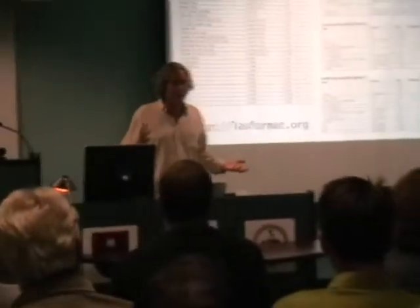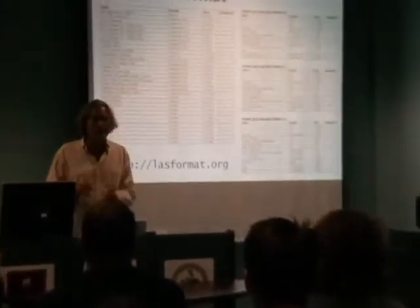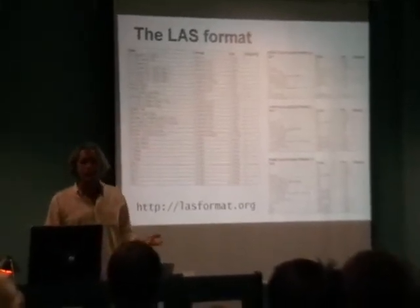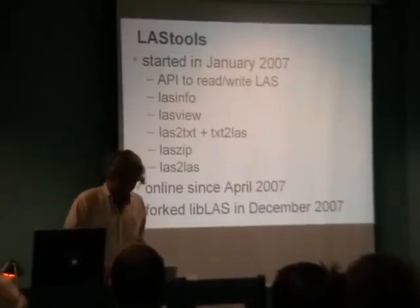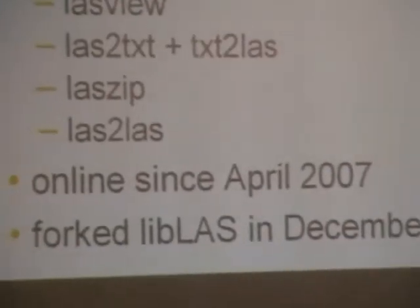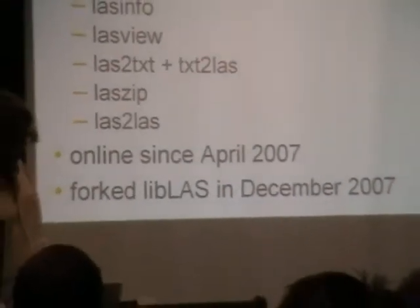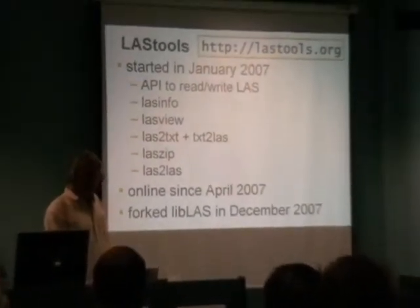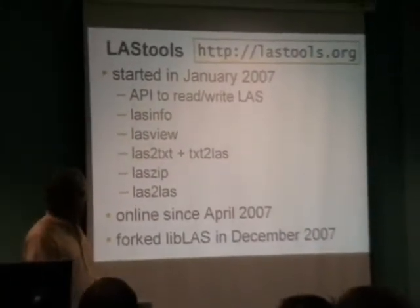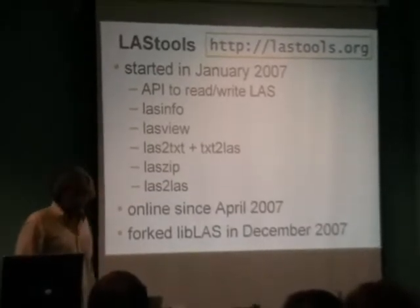I'm a computer scientist — that's easy. So I sat down and wrote a little API that can read and write these things. When you write an API, you write small tools: LASinfo to quickly see what's in the file, LASview to have a look at it. I used my four-year programming assignment from an OpenGL course — that's now called LASview. It's a terrible interactive viewer, but it still works. Some tools to convert back and forth between ASCII and the LAS format. And I also wrote LASzip, which I'll talk about a little later.